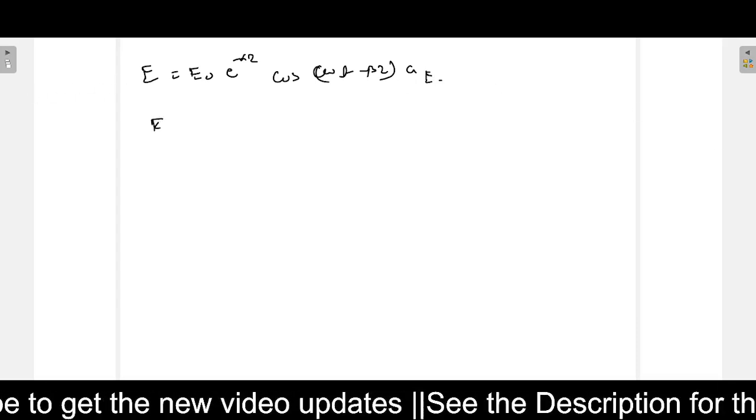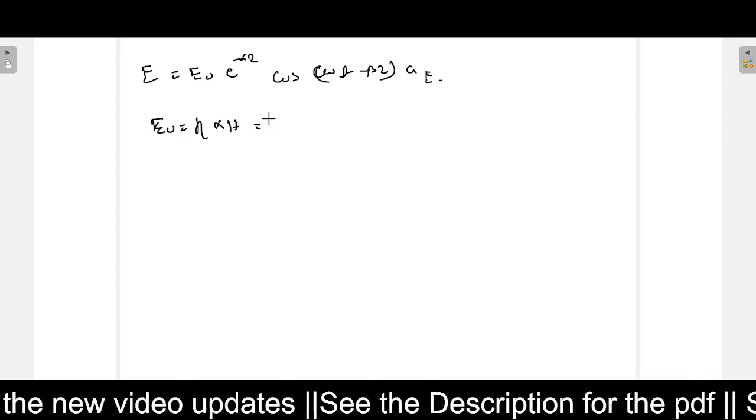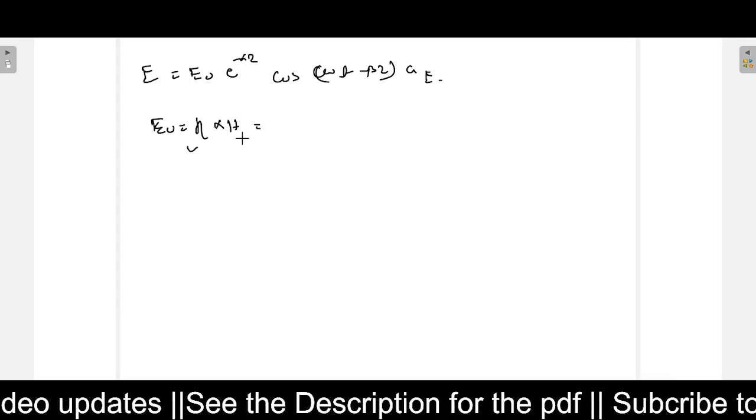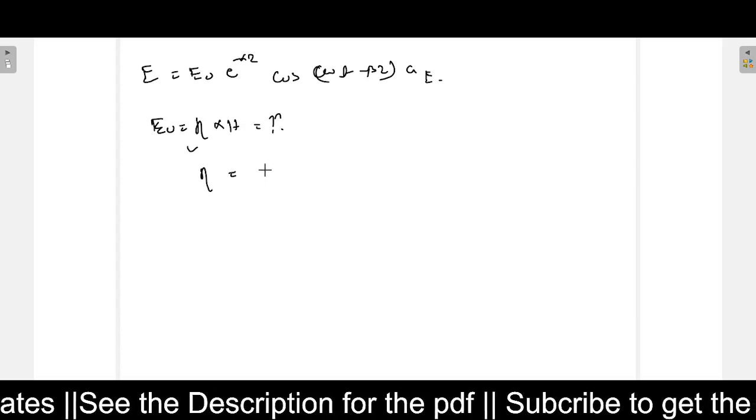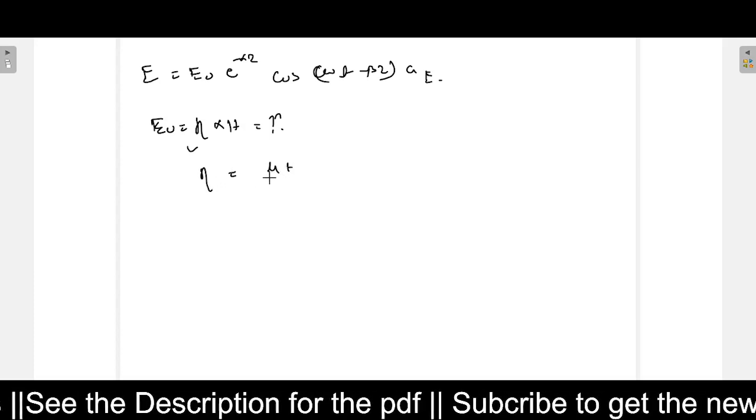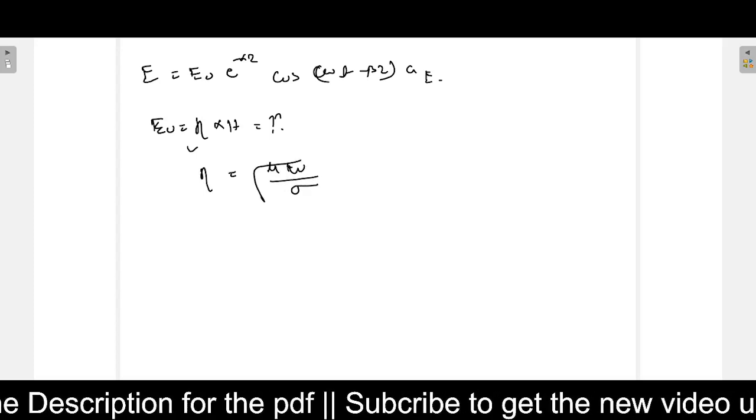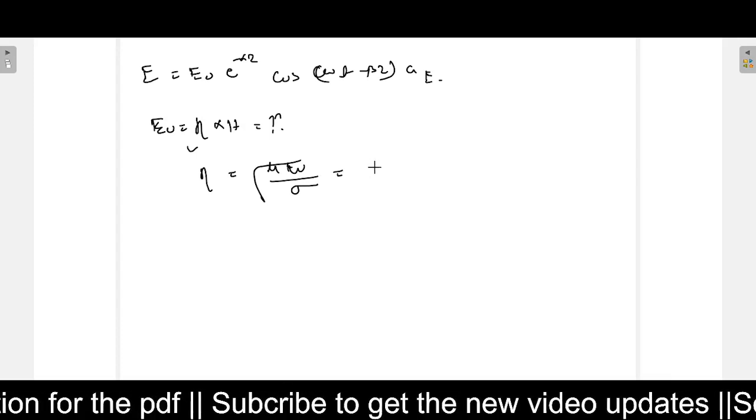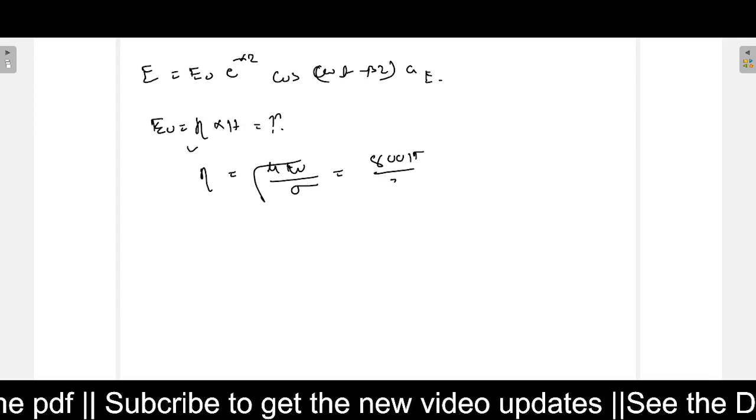To find E_naught, what we need to do? That equals eta into H. That equals how much? We do not know what is eta value, so we need to find it out. Before that, we need to find the eta value that equals square root of mu*omega divided by sigma. That is the formula for a good conductor. If we use the value, we will get eta value as 800*pi divided by 3.